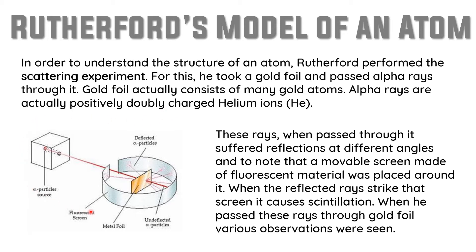Let us look at this picture. Here you can see one box — that box is an alpha particle emitter. Alpha particles are emitted from inside the box, pass through some slits, and come and hit on the gold foil placed here. These alpha particles have much energy. When they hit the gold foil, some rays are scattering — you can see the scattering.